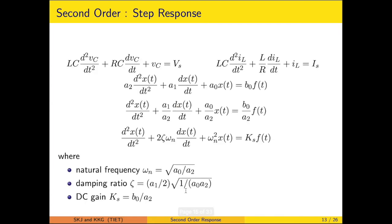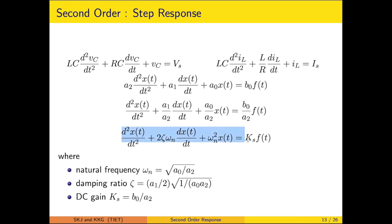The characteristic equations for both series and parallel arrangements are summarized. Written in standard form: a2 d squared x upon dt squared plus a1 dx upon dt plus a0 x of t equals b0 f of t. From this, omega n equals root of a0 upon a2, damping ratio equals a1 upon 2 times root of 1 upon a0 a2, and DC gain Ks equals b0 upon a2.